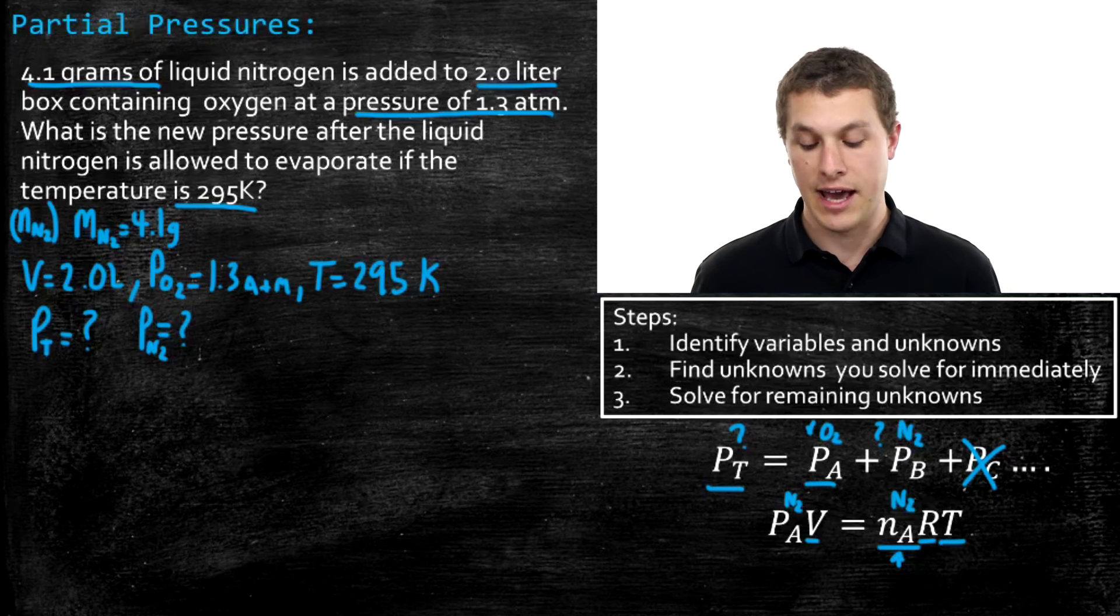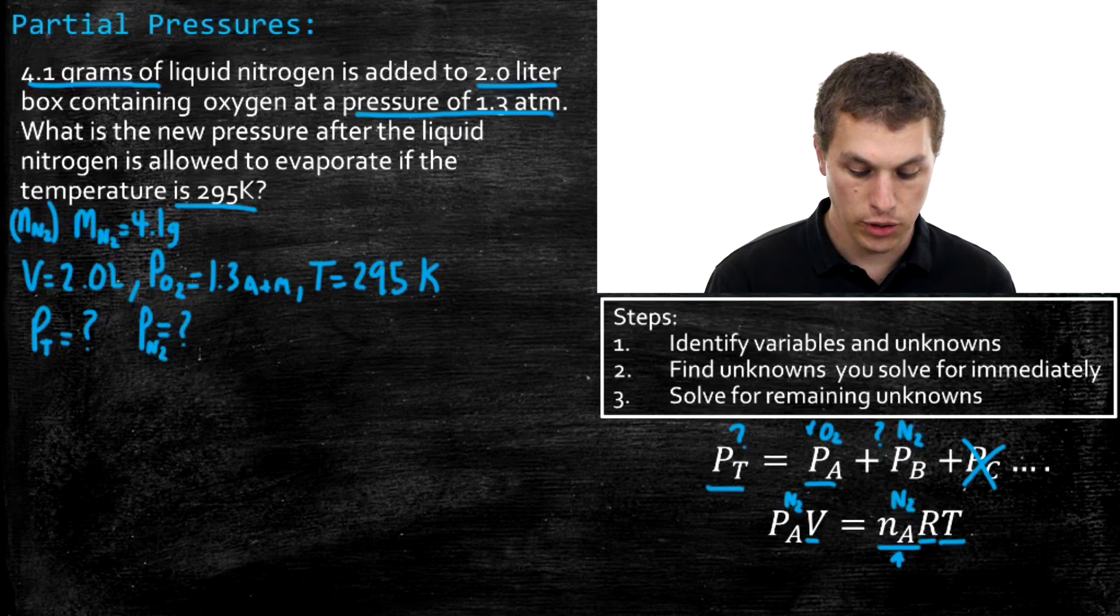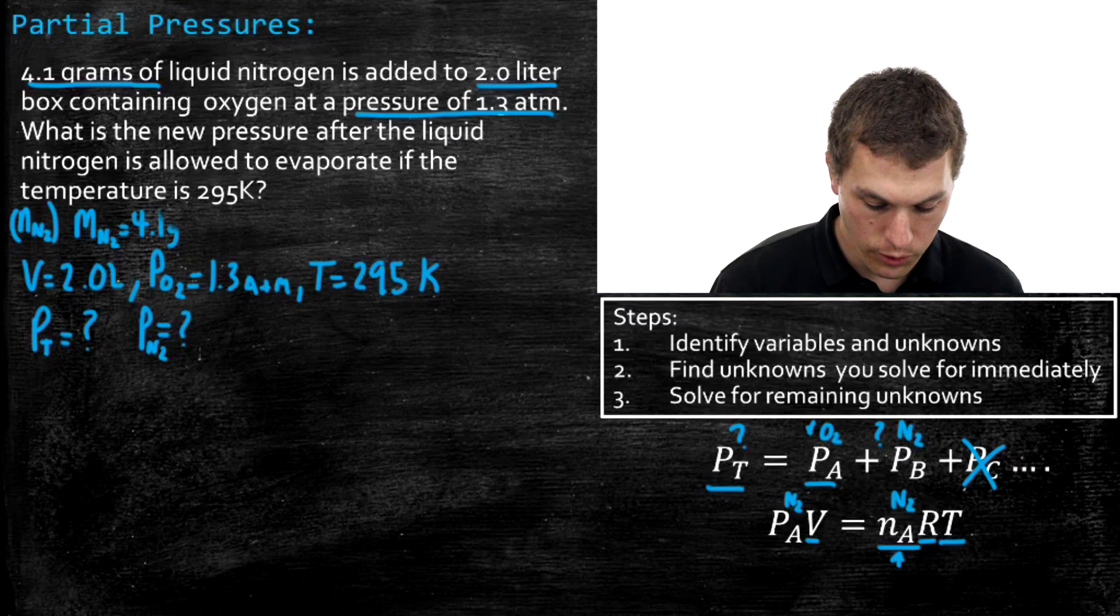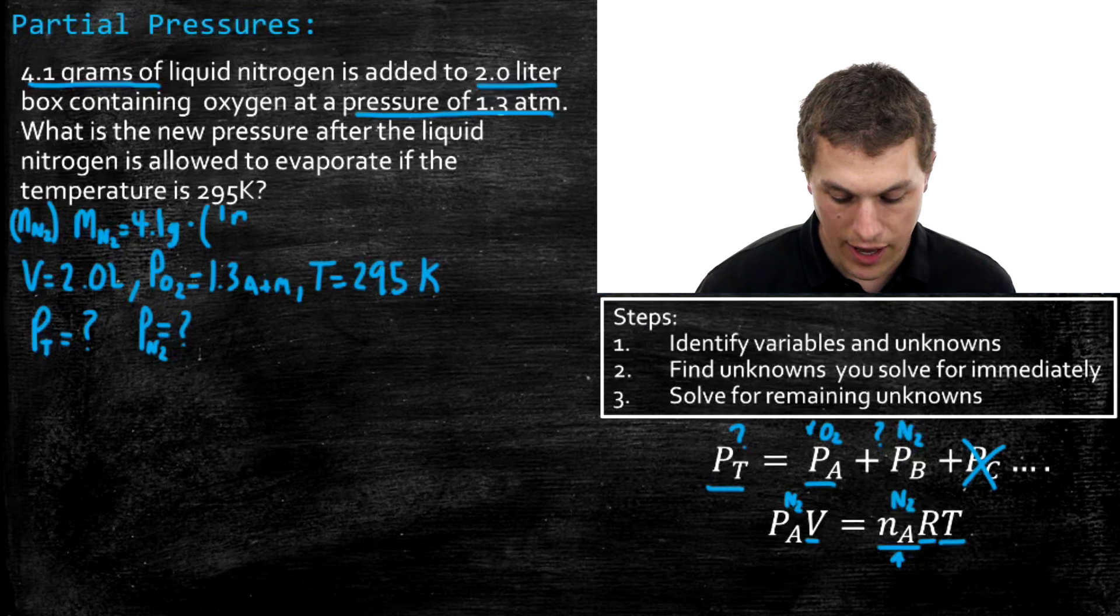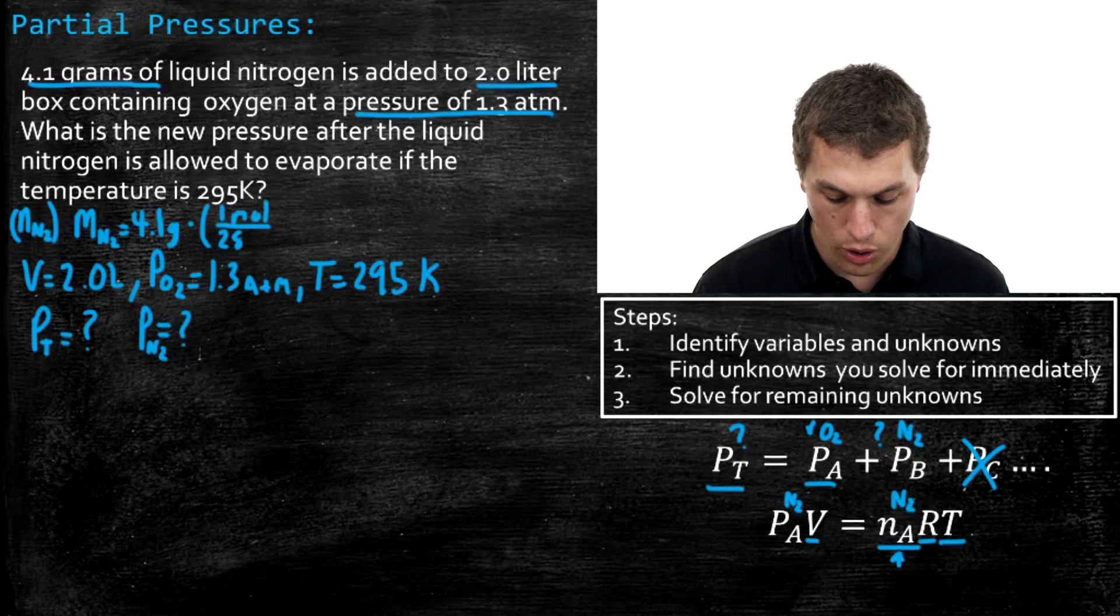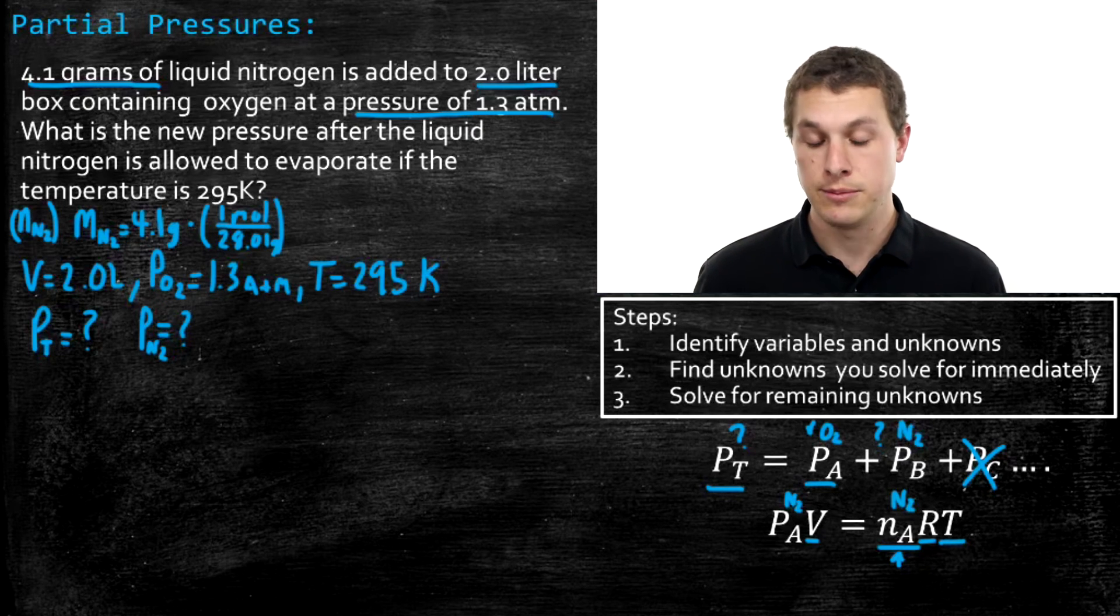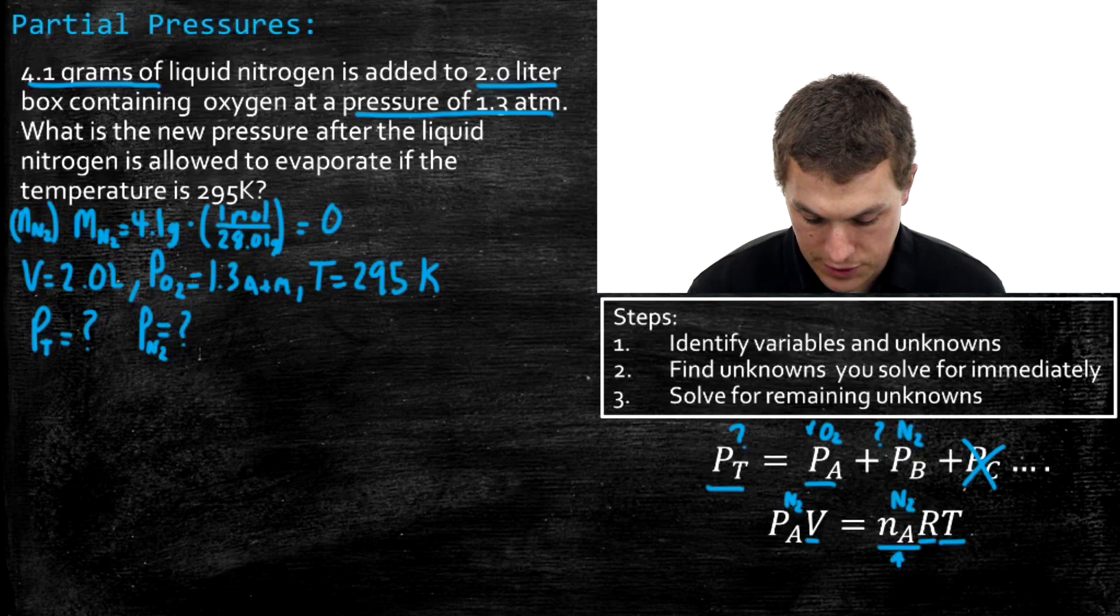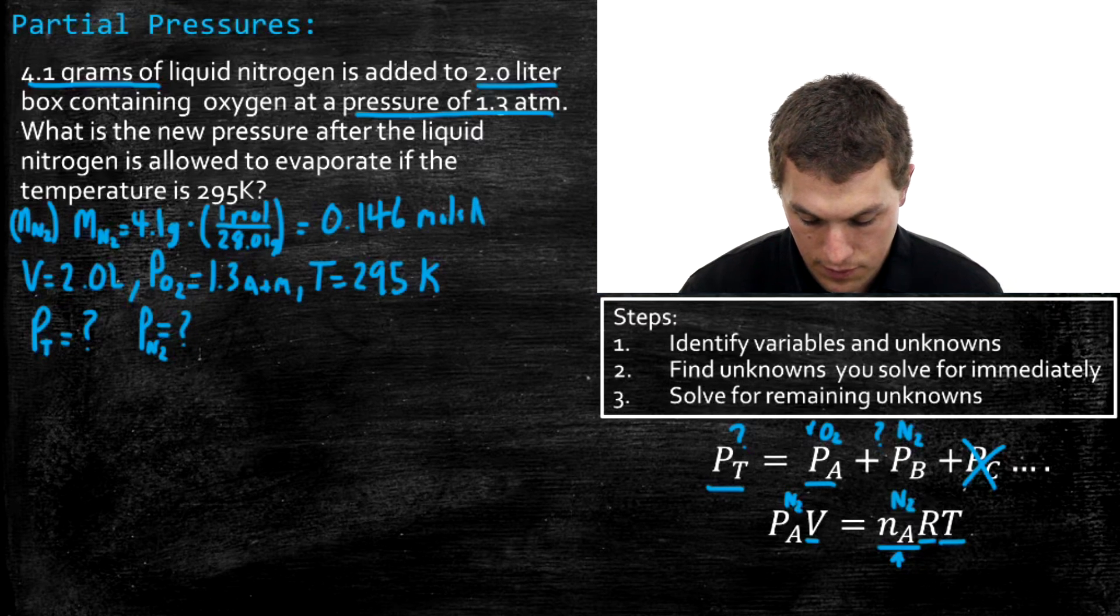Now, before we can use our ideal gas law, our ideal gas law is in terms of moles. So we have to take our mass of nitrogen in grams to moles. So I'll do that as the very first step. So we have 4.1 grams of nitrogen. And if I wanna go to moles, all I need to do is divide by the molar mass of nitrogen, or N2, there's two nitrogens here, and that's 28.01 grams. And so when I take 4.1 grams and I divide it by 28.01, that's gonna give me the number of moles of nitrogen I have, which turns out to be 0.146 moles of nitrogen.